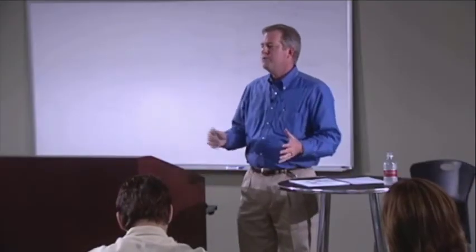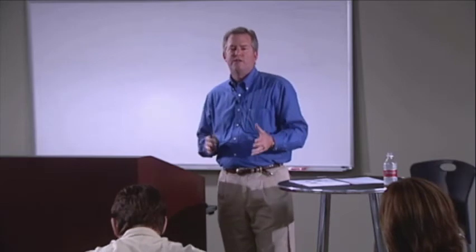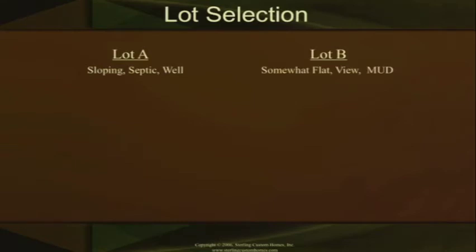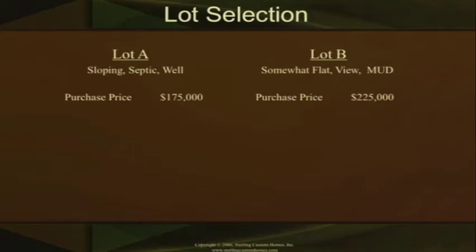So let's play a game. We do this with every one of our clients, and we think this is an important part of the lot selection process. We're going to take lot A and lot B. Lot A is going to be a sloping lot with a septic and a well. Lot B is somewhat flat, has a great view, and is in a mud district. The purchase price of lot A is $175,000. Lot B's purchase price is $225,000. You've got a $50,000 variance between lot A and lot B.